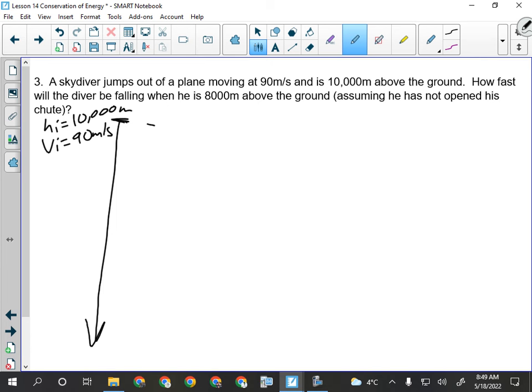Obviously the path the skydiver will follow is not vertical. They're going to do this, just like the car from yesterday. They are going to have a projectile arc like that, so their velocity initial, their initial speed story will contribute to their final speed as well as gravity. And then here at the end, we know our final height is 8,000 meters, so they're falling two vertical kilometers, and we are looking for their final speed.